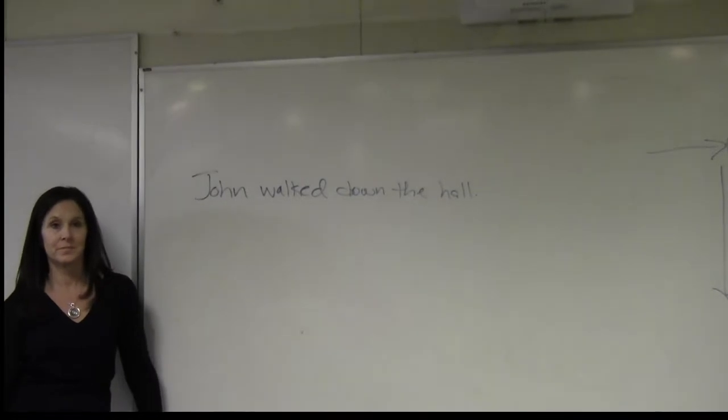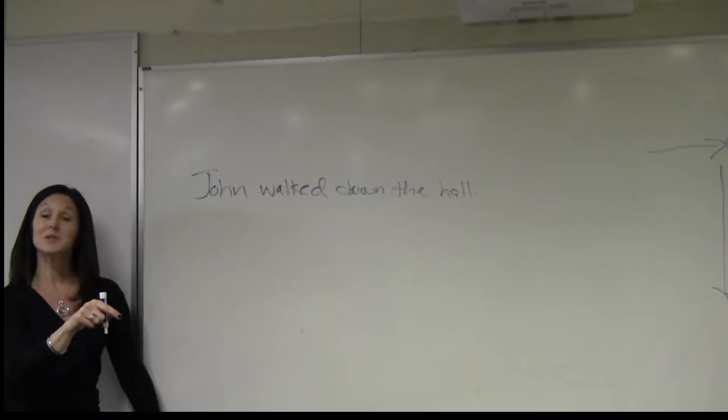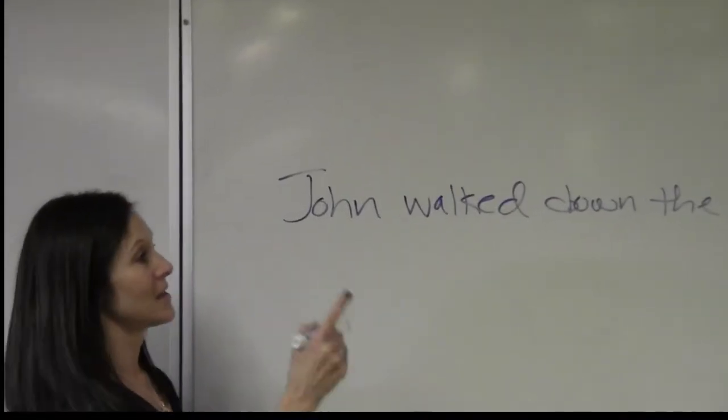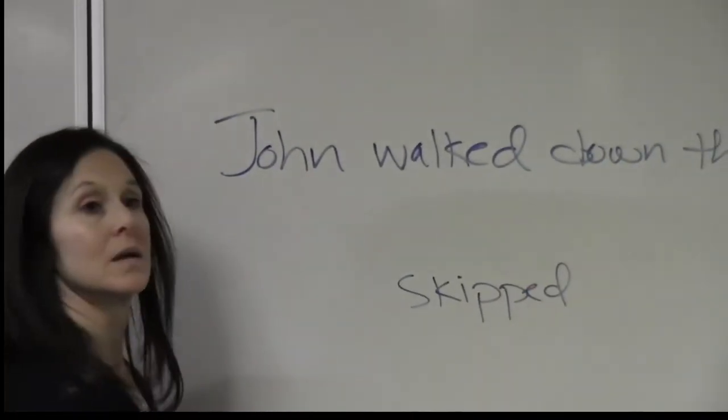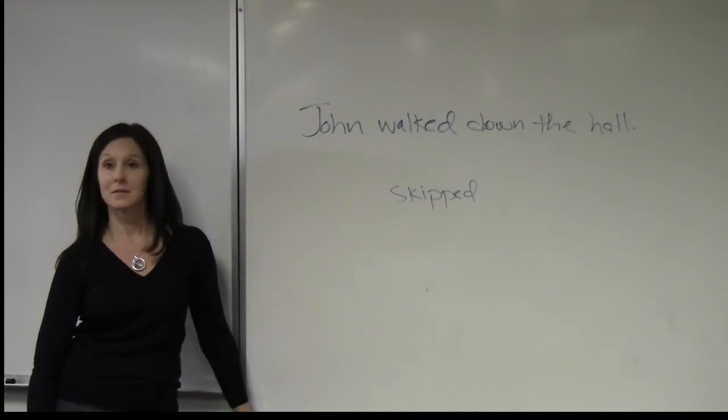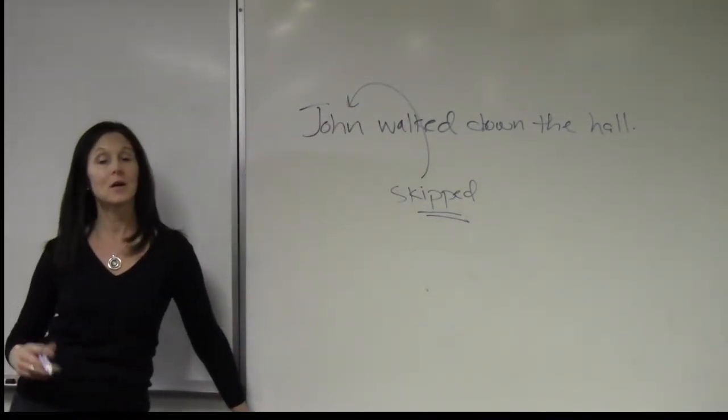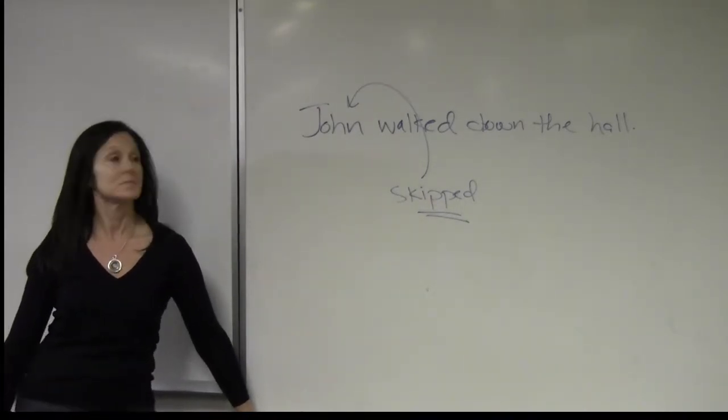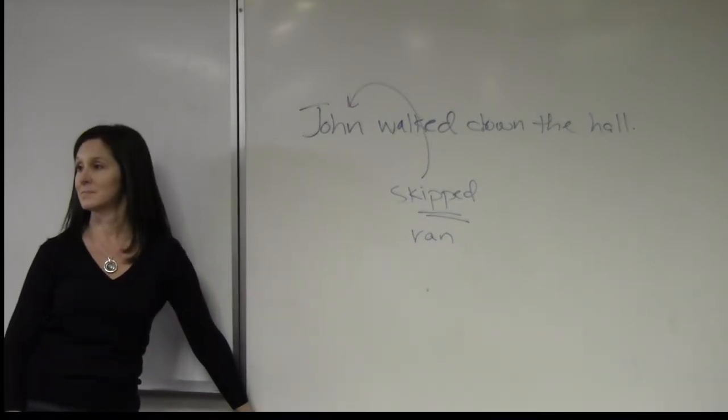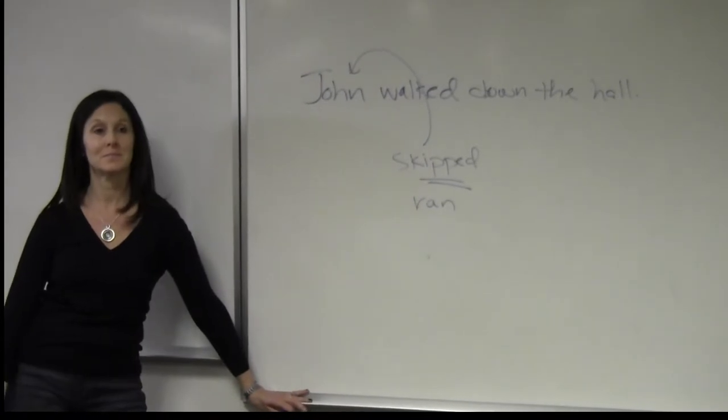John skipped down the hall. If John skipped down the hall, what might that say about John? He was happy, energetic, celebrating. This verb can tell you something about this noun. What's another verb? He ran down the hall. What might that tell you? He's late, in a hurry, impatient, someone's chasing him. How else could John get down the hall? He could skateboard. What would that tell you? He's athletic, he's a rebel.